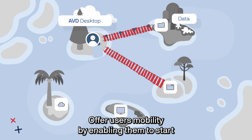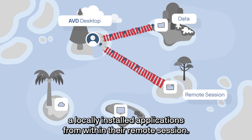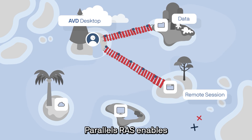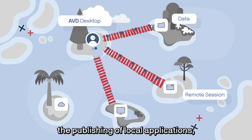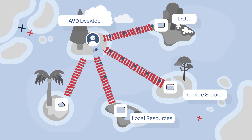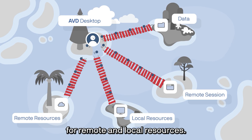Offer users mobility by enabling them to start locally installed applications from within their remote session. Parallels RAS enables the publishing of local applications, making the client a single launcher for remote and local resources.